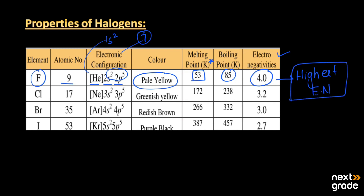After fluorine, we have chlorine. Its atomic number is 17, with 17 total electrons, but its valence shell contains 7 electrons. Its color is greenish yellow, its melting point is 172 K, its boiling point is 238 K, and its electronegativity is 3.2, which is less than that of fluorine.